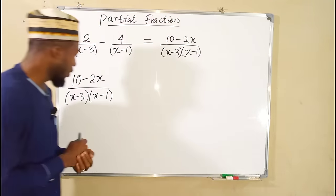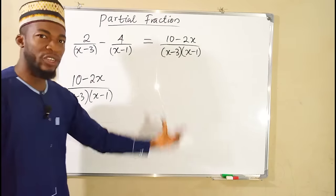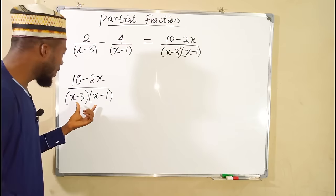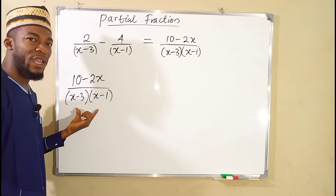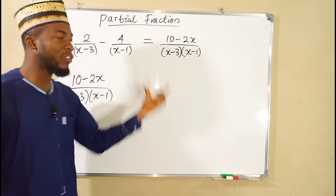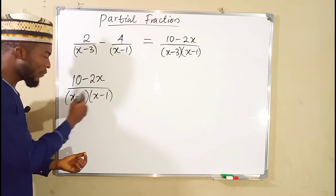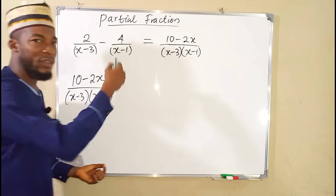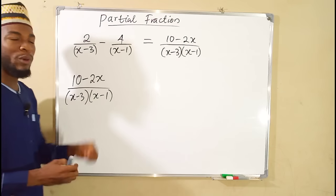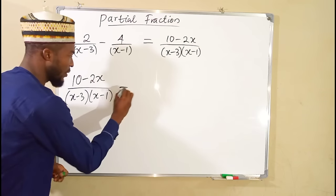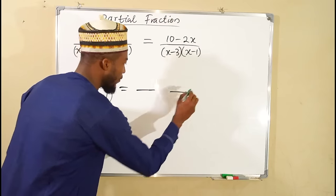Whenever you are given a compound fraction to split into partial fractions, always consider your denominator. The number of factors you have there will determine the number of fractions you are going to obtain. For instance, here we have just two factors, so we are going to obtain two fractions.